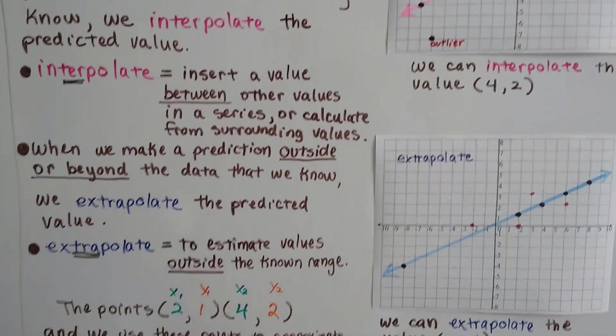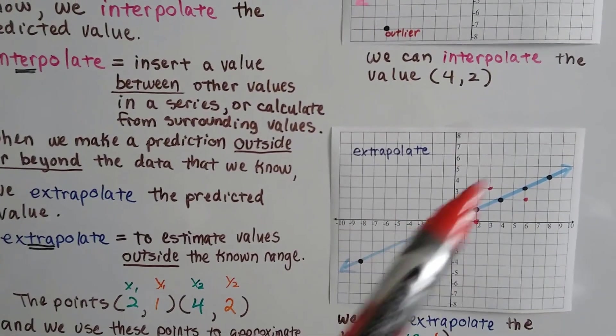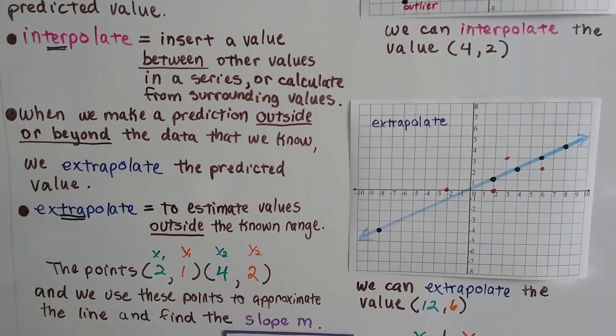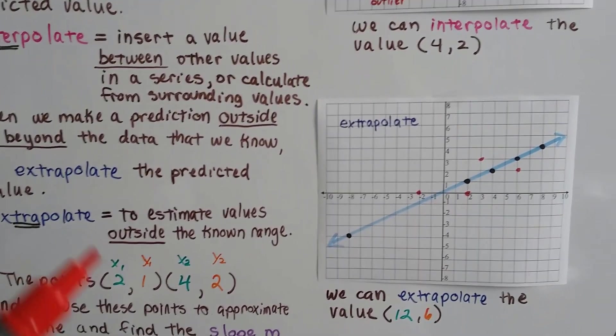Now, when we make a prediction outside or beyond the data that we know, so it would be off the chart, off the graph, then we extrapolate the predicted value. And extrapolate means to estimate values outside the known range.